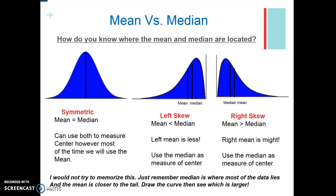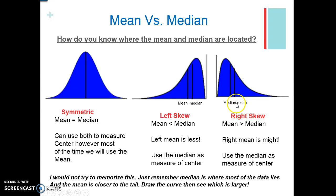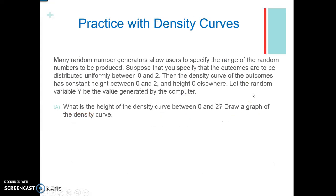I would not try to memorize this. What I do is draw a curve, put the median where most of the data is, then ask where's the tail and put the mean towards the tail. Then I ask which one's going to be bigger. Draw the median where most of the data is and the mean towards the tail, and that'll tell you which is larger or smaller.